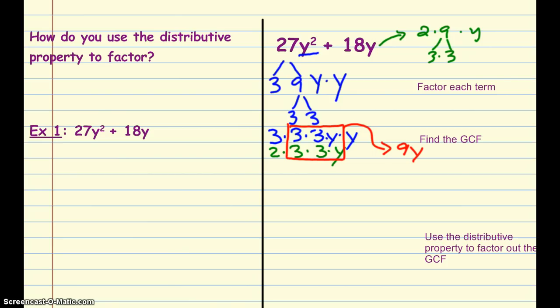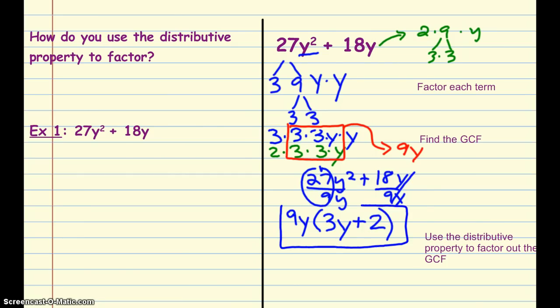So what we're going to do from here is take each term, and we're going to divide each term by 9y. So from here, I'm going to bring my 9y out. We're factoring it. So 27 divided by 9 is 3, and y squared divided by y is y, plus 18 divided by 9 is 2, and then those y's cancel each other out. So completely factored, this is 9y times the quantity of 3y plus 2. We use that distributive property to factor out that greatest common factor.